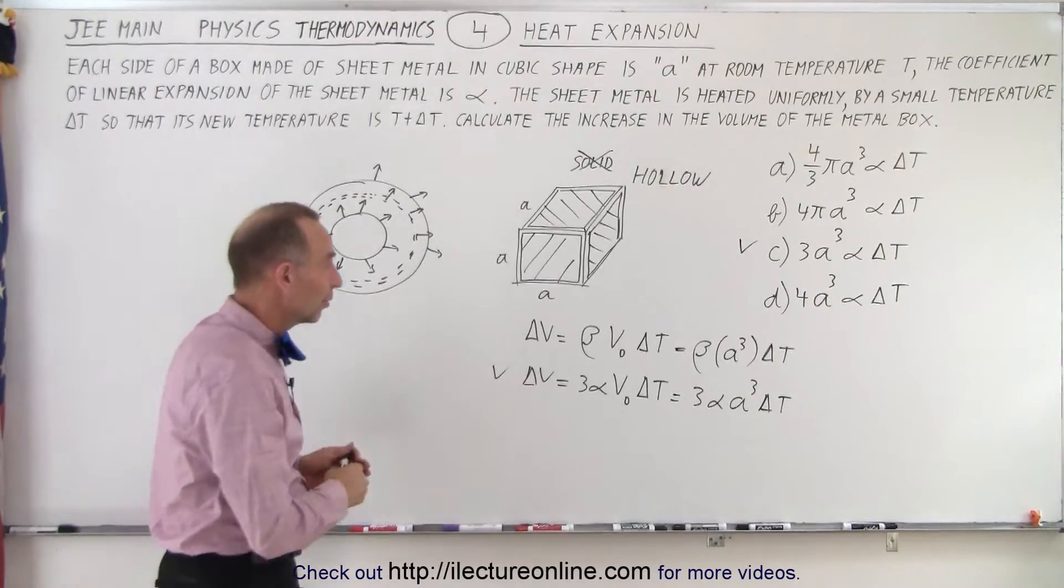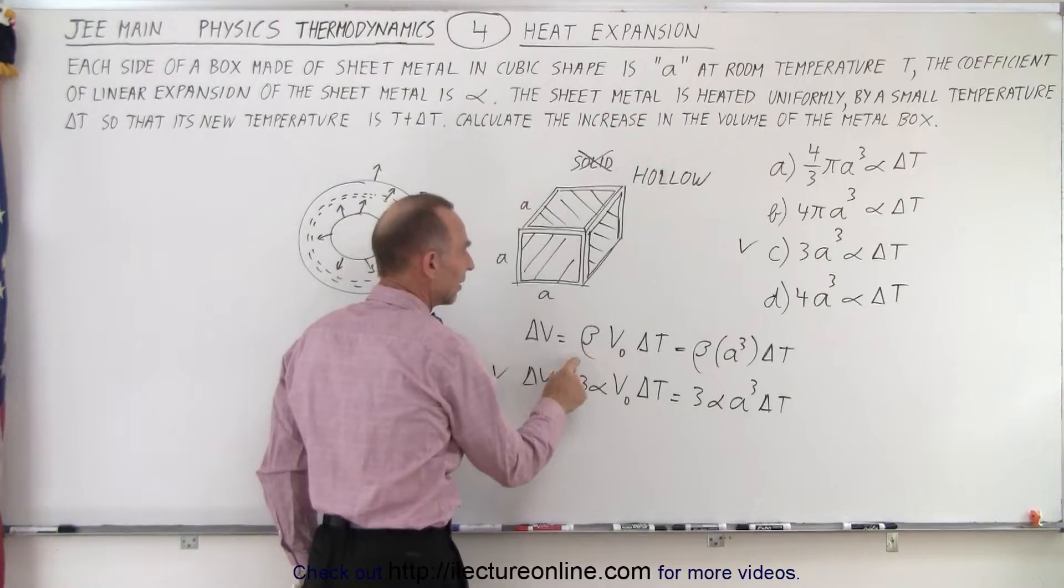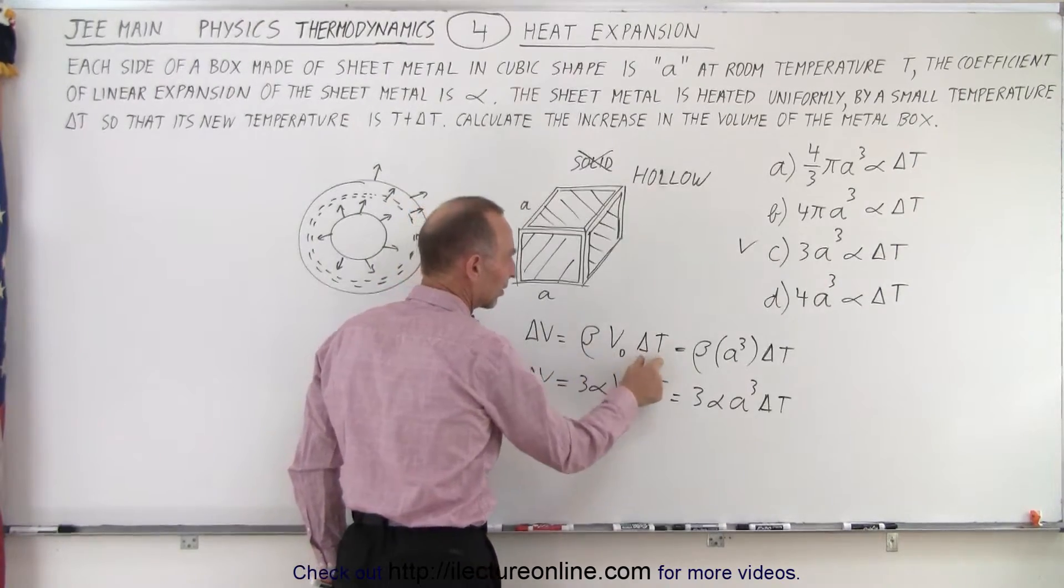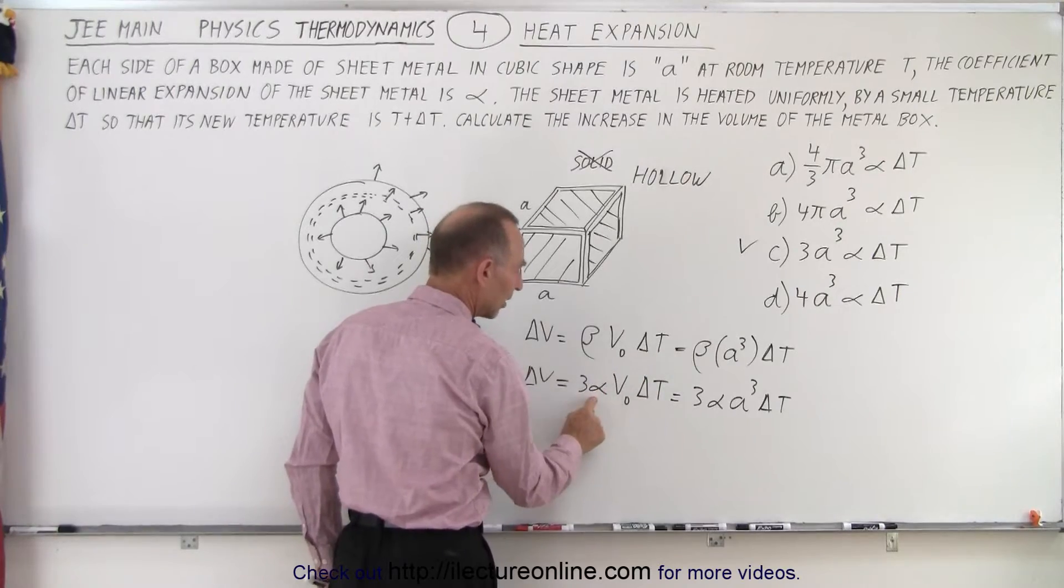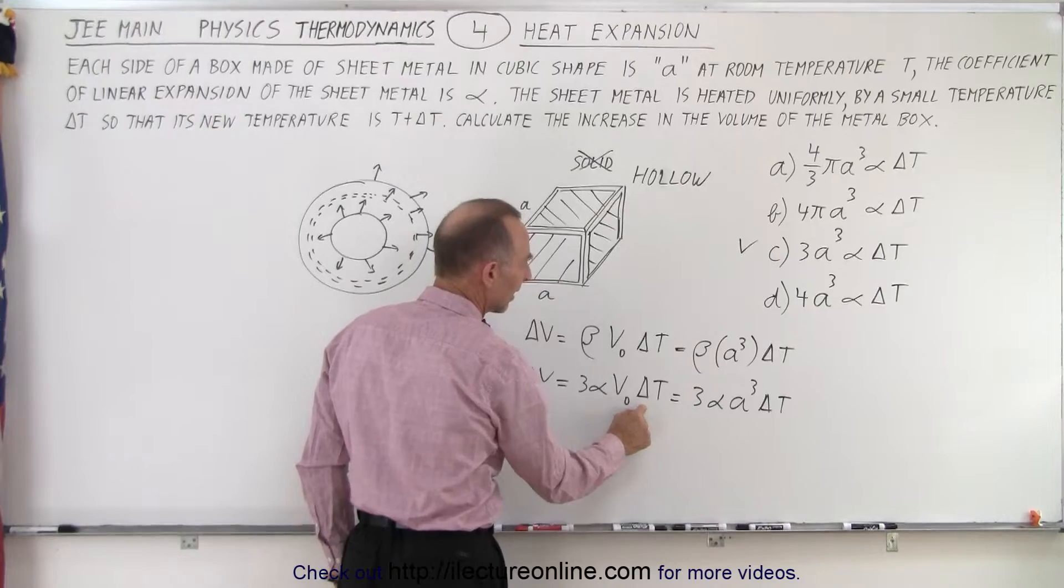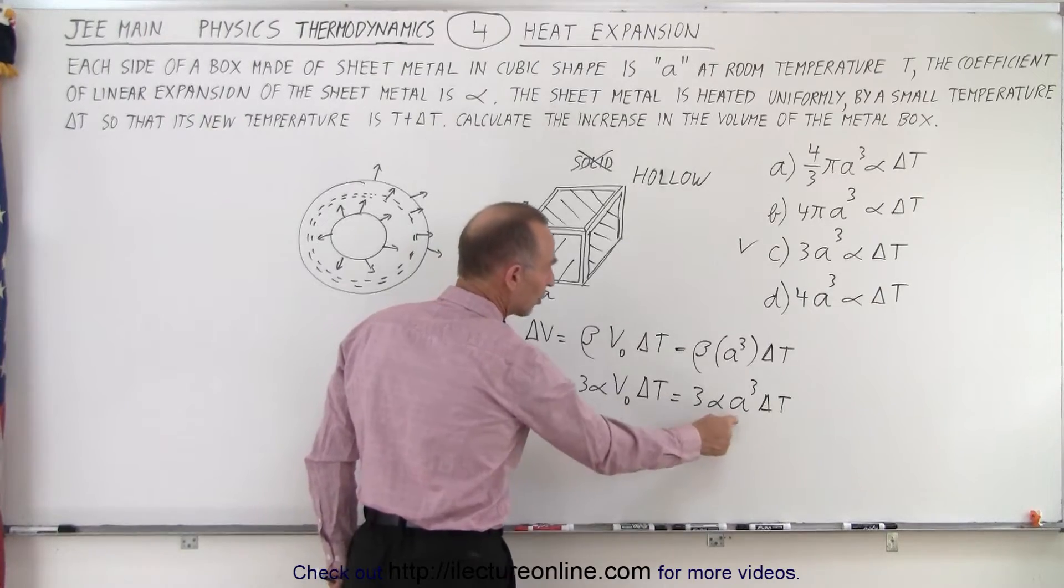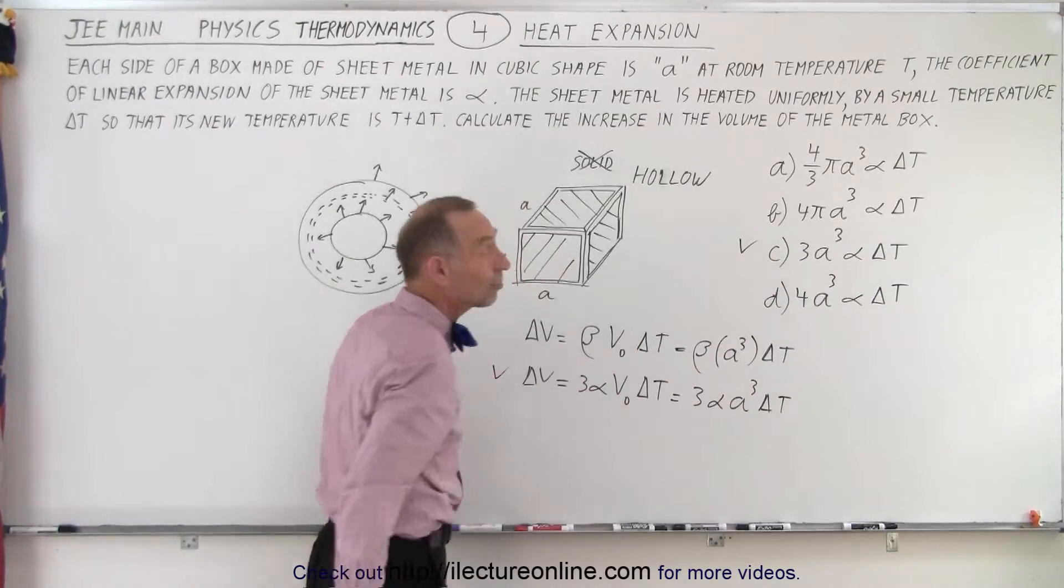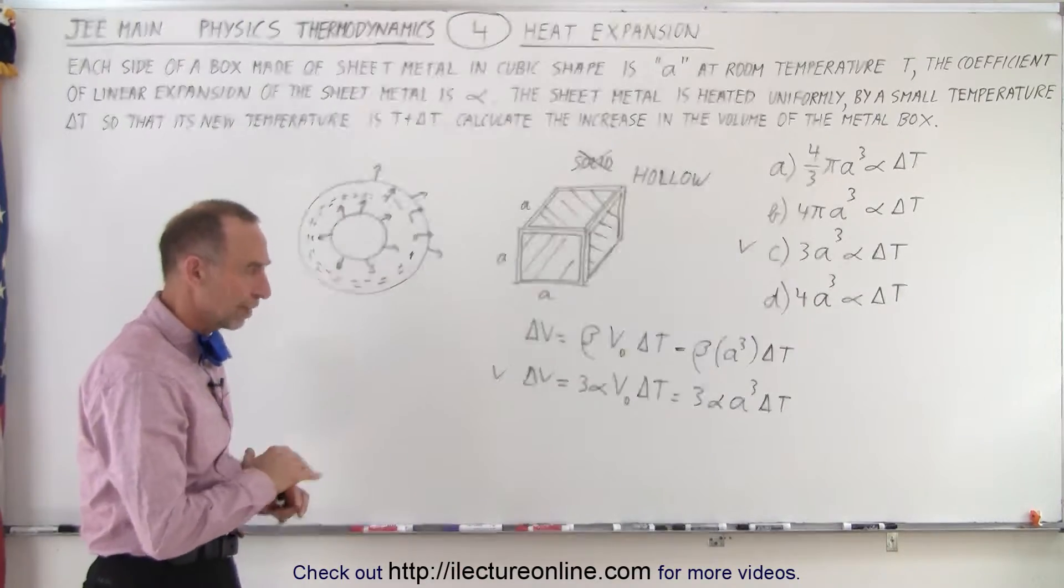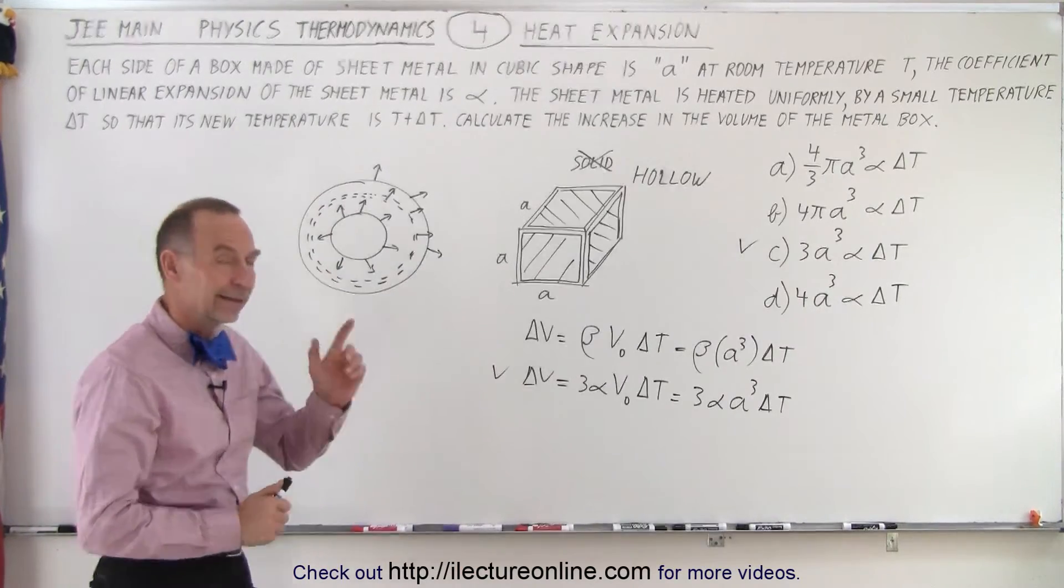So all you have to realize is the principle: the change in volume due to heating is equal either to the volume coefficient of expansion times the original volume times delta T, or three times the linear coefficient of expansion times the original volume times delta T. And of course, the original volume would be A cubed. And that's how you get that answer. And it's the same for hollow as well as solid cubes. Exactly the same principle.